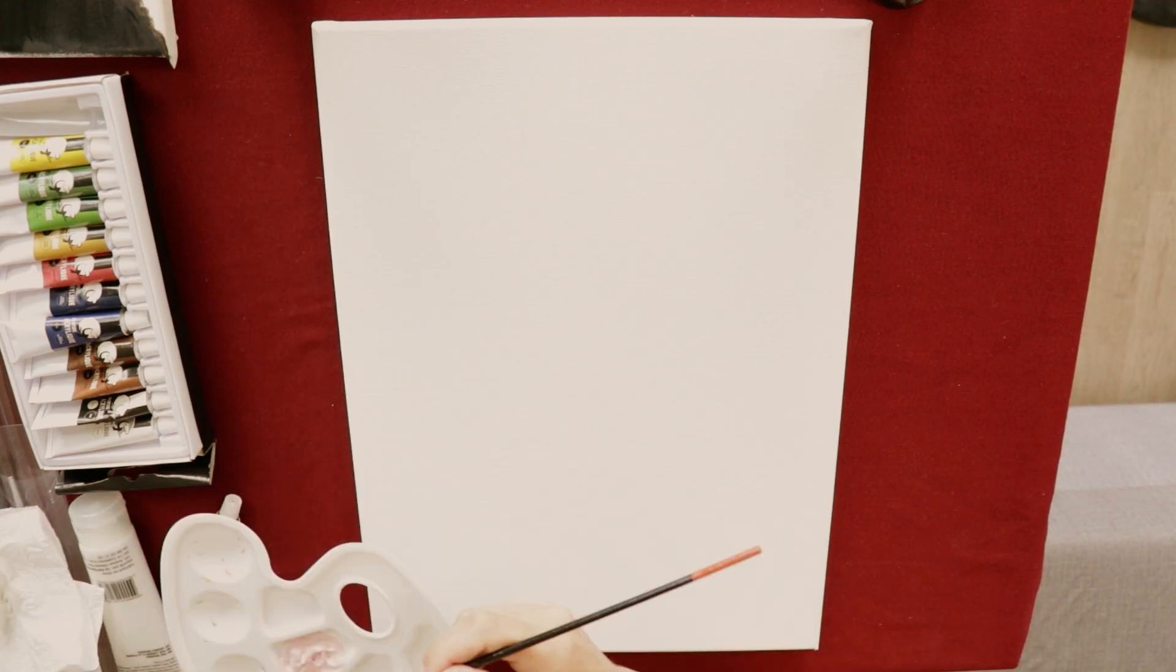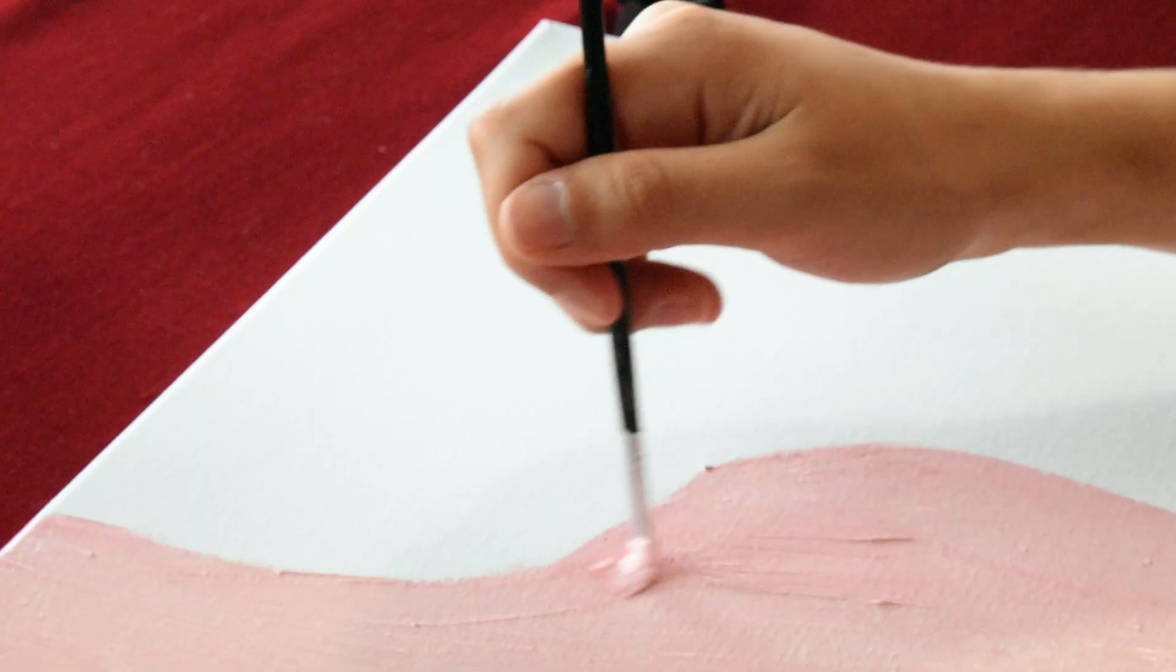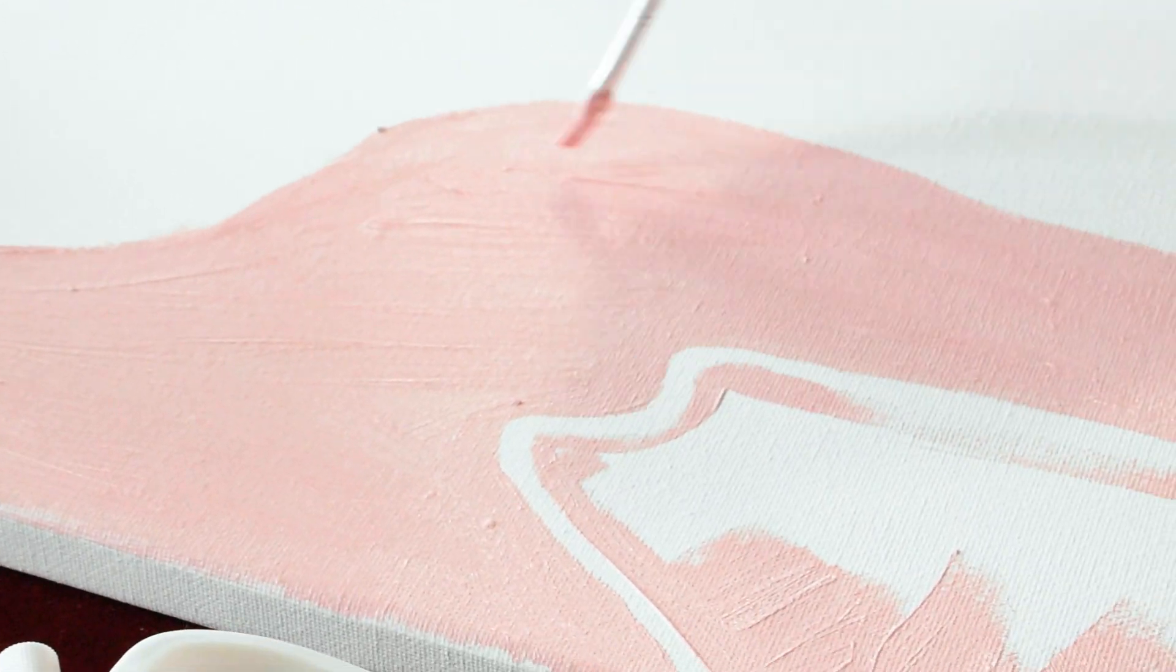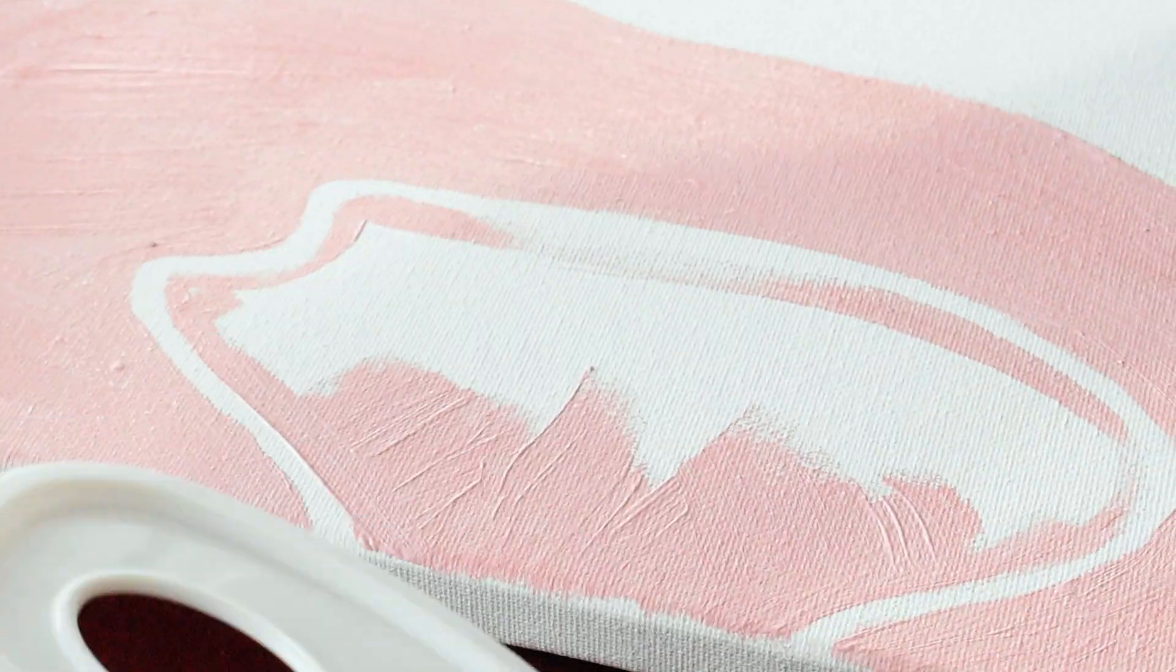For the second canvas, I decided to not do the inverted colors, so I painted some shapes onto the canvas with pastel colors.